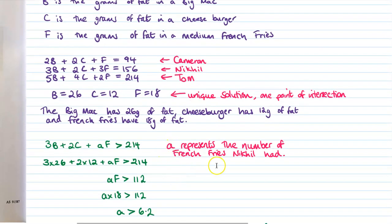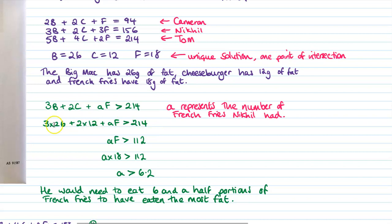And again, remember, as you're going along, write notes about what you're doing. So A represents the number of French fries. So we've made it more than 214. The Big Macs and the cheeseburgers haven't changed. They're still 26 and 12 grams. So then we've got this equation to work through and to solve that inequality. So A's got to be more than 6.2. The closest half portion to that would be six and a half. So Nicol needs to eat six and a half portions of French fries to have eaten the most fat. So there's the second bit done.